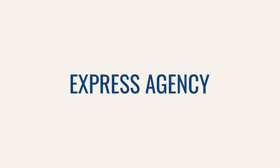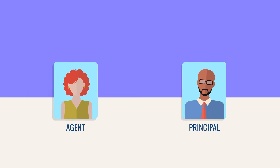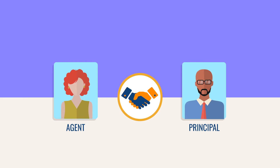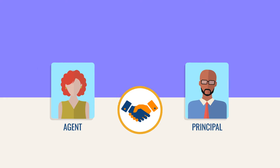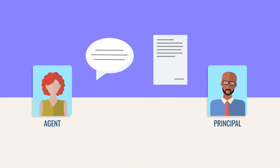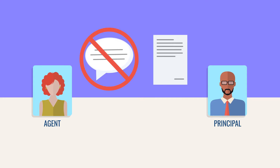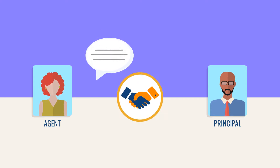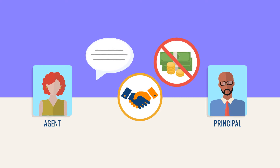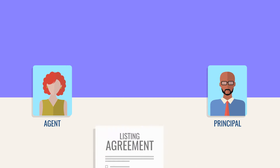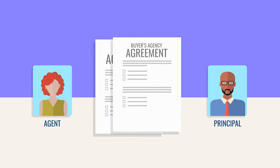Express agency creates an agency relationship through an agreement between an agent and a principal. The agent and the principal state their intentions to enter into an agency relationship in which the agent will represent the principal. They can do this either orally or in writing, but not all states consider oral agreements to be enforceable. This means that it is possible for an oral agreement to establish an agency relationship, but not be enforceable by you, the agent, to collect a fee. The typical written agreement is a listing agreement or a buyer's agency agreement.